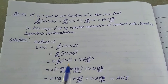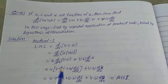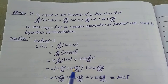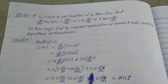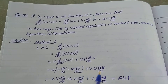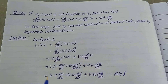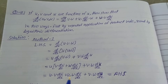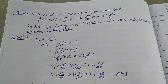Taking u common: u times [first, applying product rule to v·w gives v·dw/dx plus w·dv/dx] plus v·w·du/dx. Multiplying u inside the bracket gives: u·v·dw/dx plus u·w·dv/dx plus v·w·du/dx.